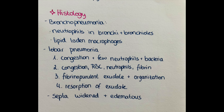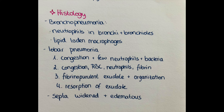In histology, we differentiate between bronchopneumonia and lobar pneumonia. In bronchopneumonia, there are many neutrophils in the bronchi, bronchioles, and surrounding alveoli. Lipid pneumonia can sometimes occur in bronchopneumonia, with lipid-laden macrophages. In lobar pneumonia, the stages are again distinguished: the first stage shows congestion and a few neutrophils as inflammatory reaction to bacteria, visible depending on staining; the second stage shows congestion, red blood cells, many neutrophils, and fibrin — the red hepatisation stage.